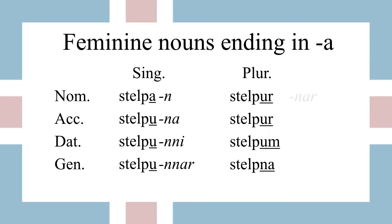Now, with the definite article, we have stelpurnar, stelpurnar, stelpunum, and stelpnanna. And that does it for our feminine nouns ending in a.